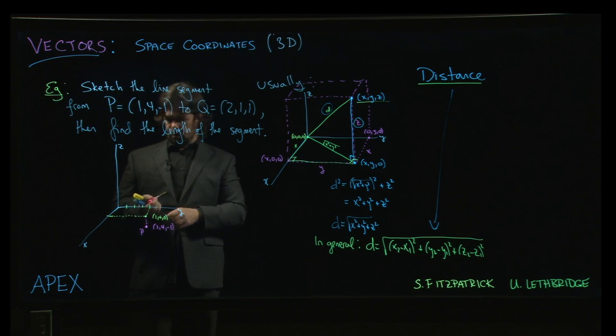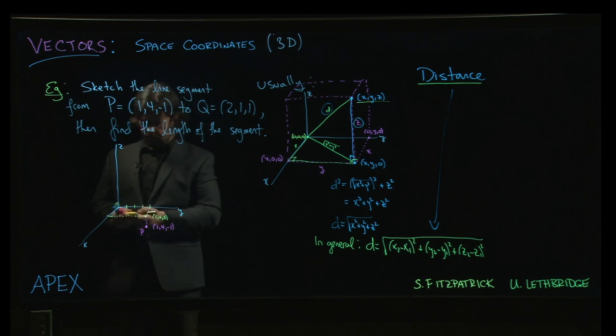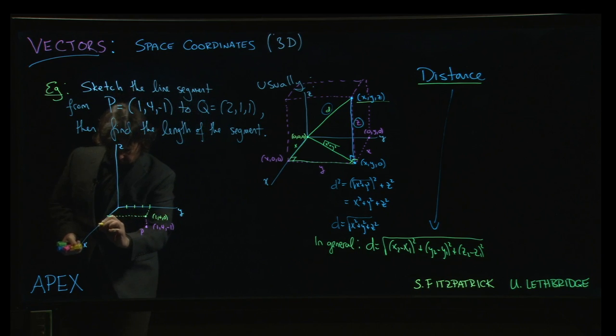Next, we want to do the point Q. So it says move out two units in the x-direction. So we go 1, 2. And then over one unit in the y-direction. So we're looking. Okay, so there's the point 2, 1, 0.